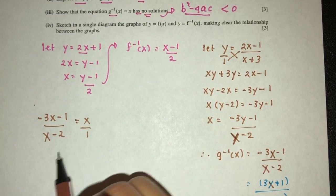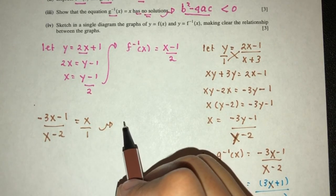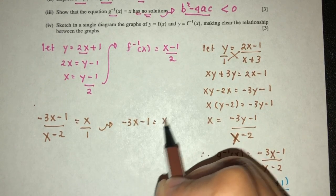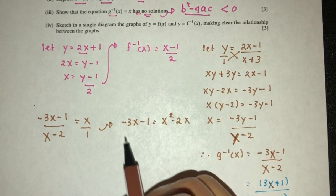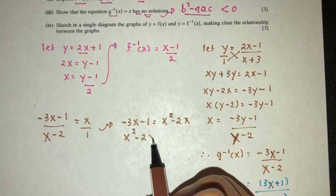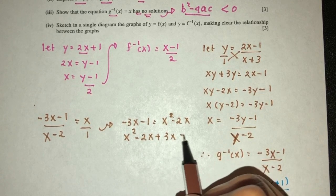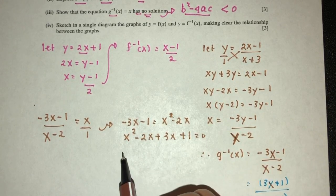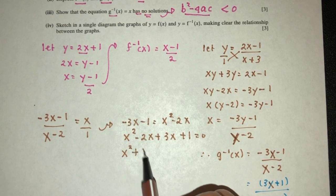So now we cross multiply, you will have what? Let's see, that will give you minus 3x, minus 1 gives you x squared minus 2x. So x squared minus 2x, plus 3x, plus 1, so x squared plus x, plus 1.